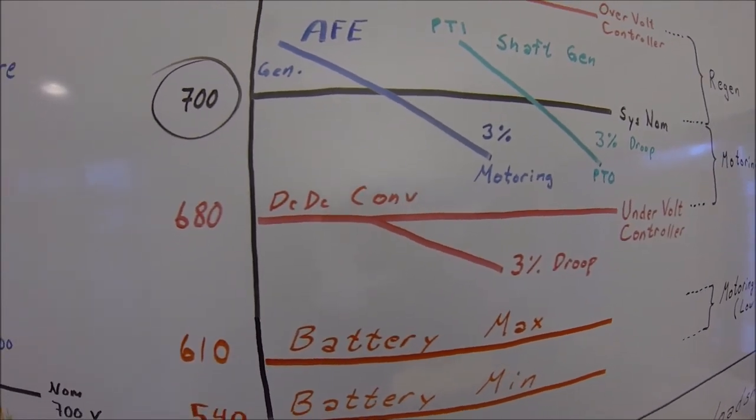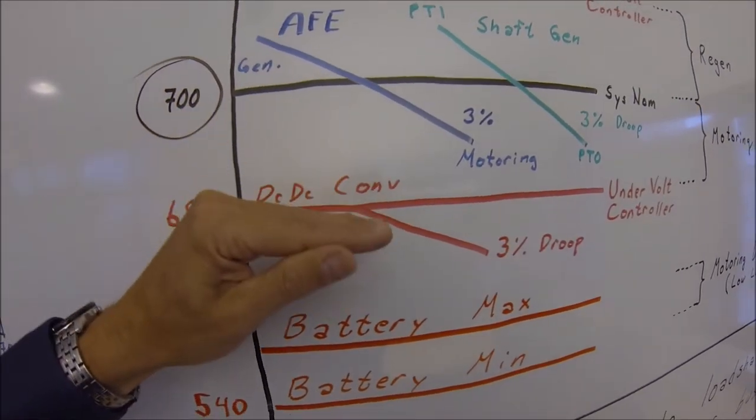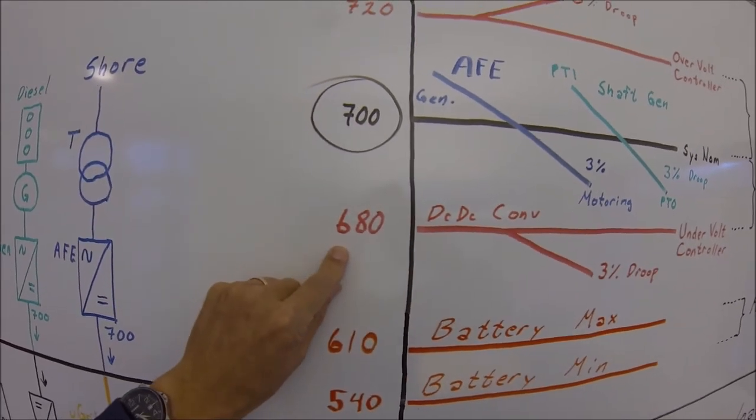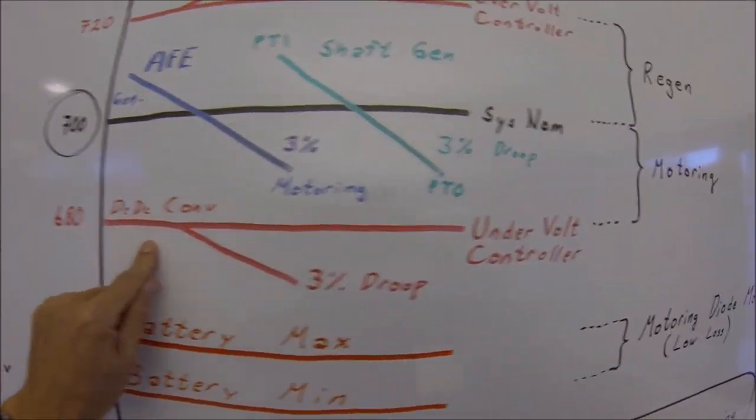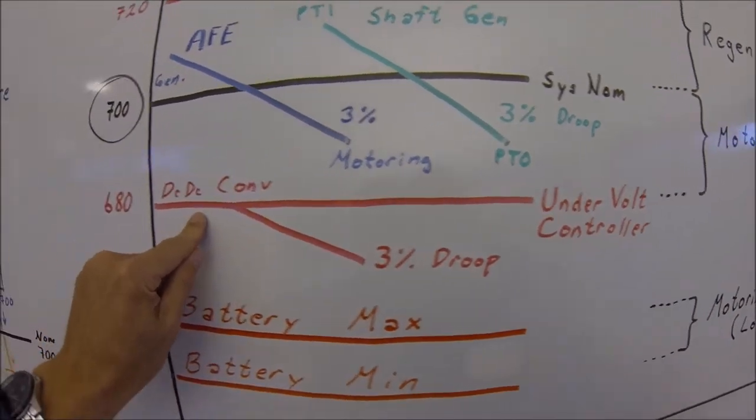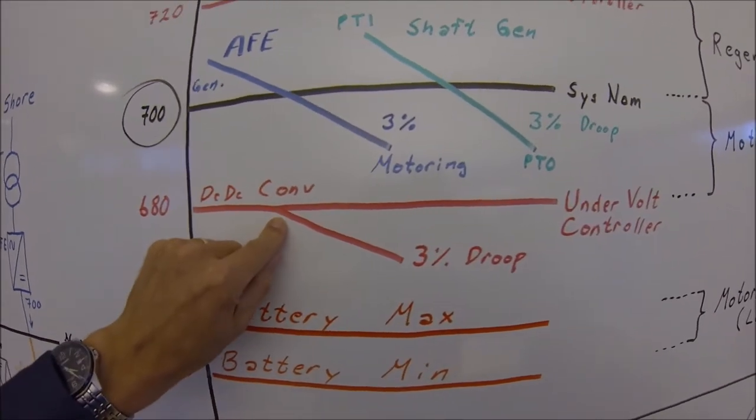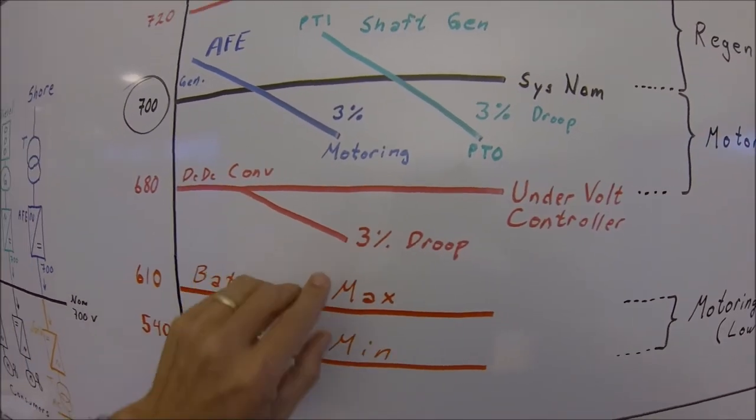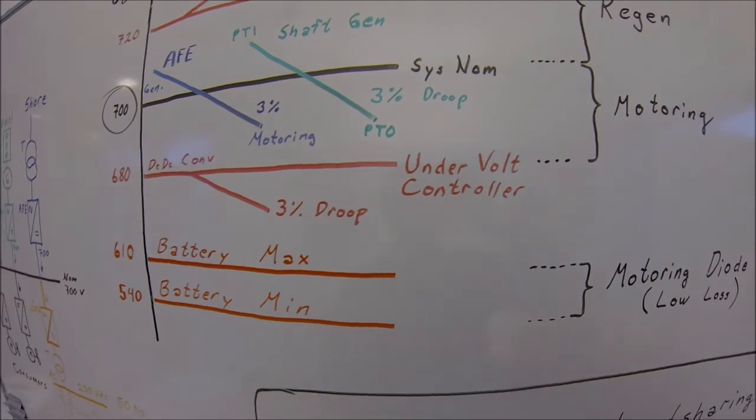You need more power, for example, for the propulsion unit. The voltage on the bus will drop. It will go down to the DC-DC converter under voltage control level. Here the battery will start feeding into the system, and with a 3% drooping you can do it with many DC converters.